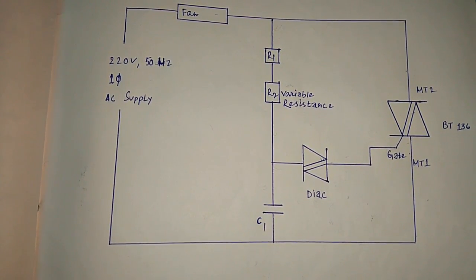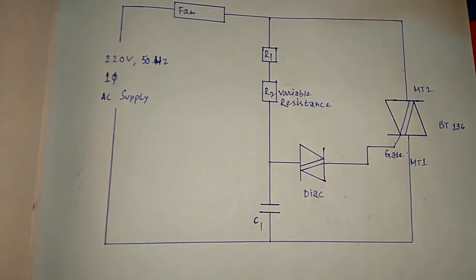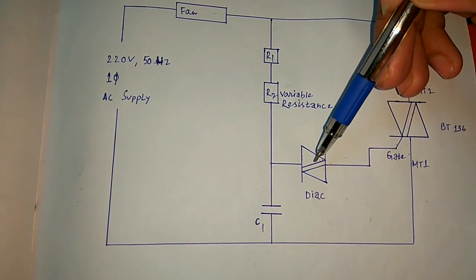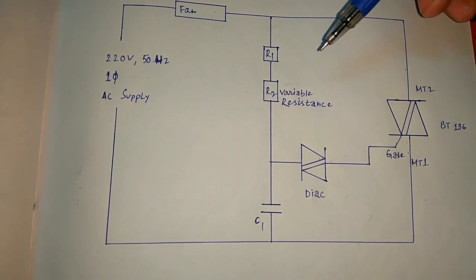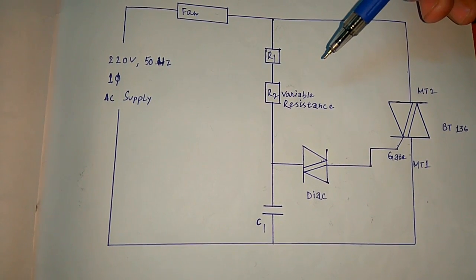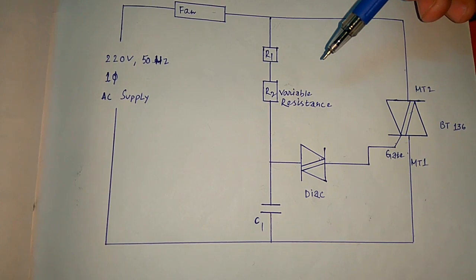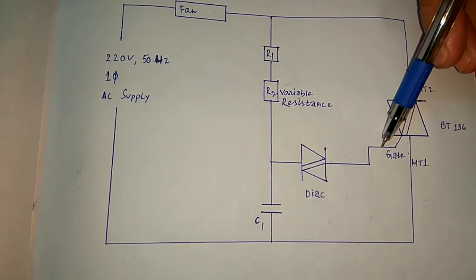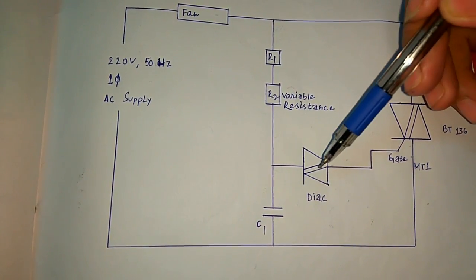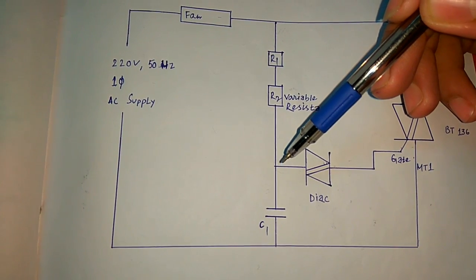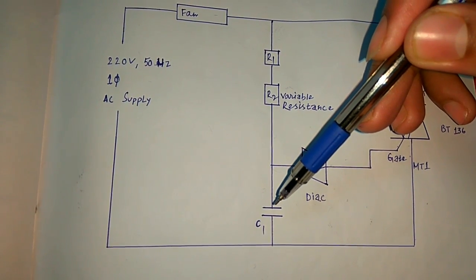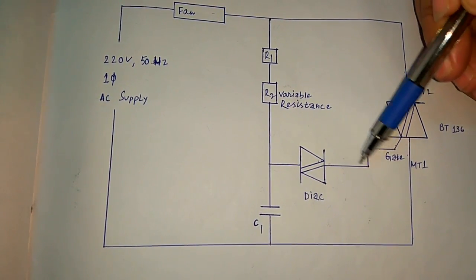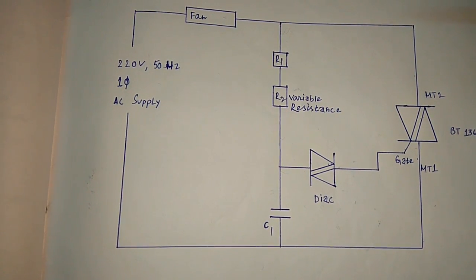The charging is determined by the resistances R1 and R2. Once the voltage across this capacitor is more than the break over voltage of the DIAC, the DIAC will start conducting and the capacitor will start discharging through the DIAC towards the gate terminal. As soon as the DIAC starts conducting, the capacitor discharges through the gate terminal of TRIAC.